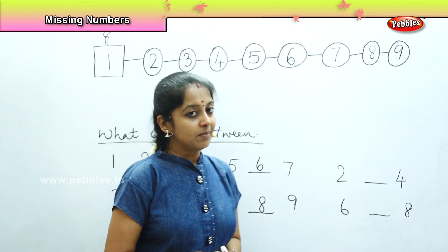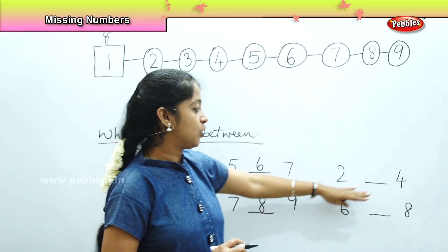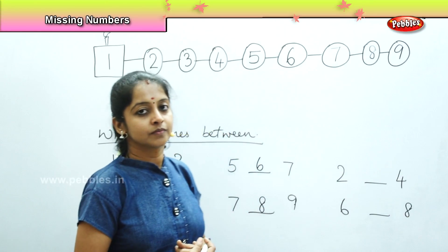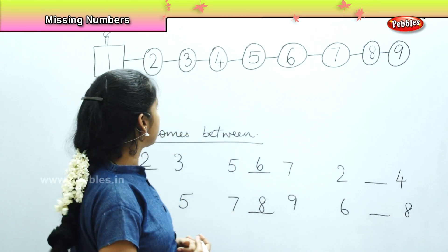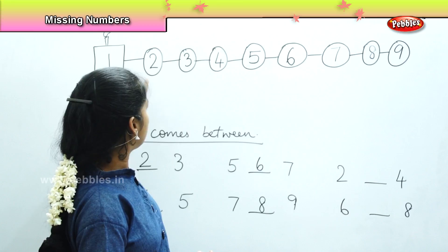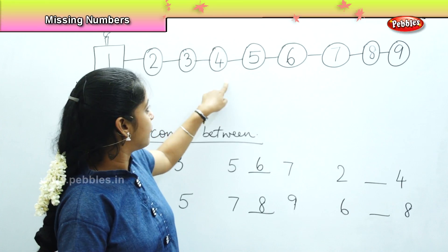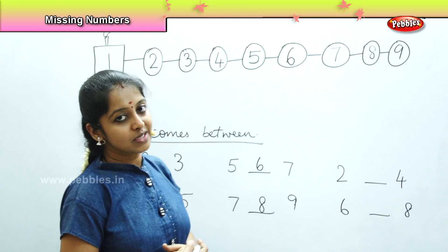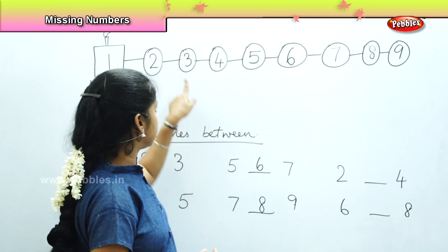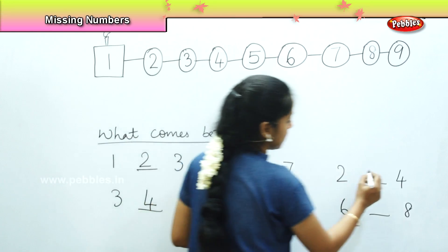Now tell me what number will come in between 2 and 4? See here — see the picture between bogey number 2 and bogey number 4. What is the number which is coming? It is number 3.